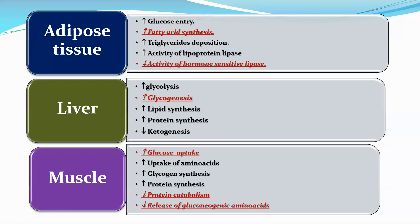The target organs for insulin effects are adipose tissue, liver, and muscles. In adipose tissue, insulin enhances glucose utilization, fatty acid synthesis, and triglyceride synthesis, and importantly inhibits lipolysis of triglycerides. In the liver, insulin increases glucose utilization, glycogen synthesis (glycogenesis), protein synthesis, and lipid synthesis. In muscles, insulin enhances glucose uptake, increases glycogen synthesis, and decreases protein catabolism.